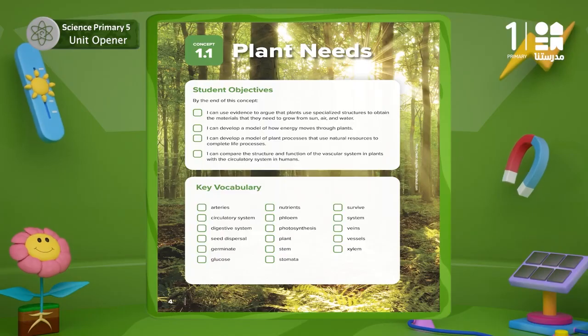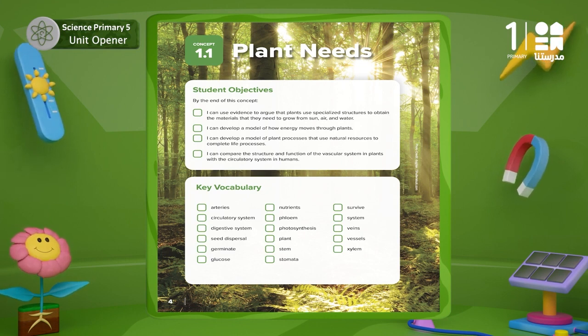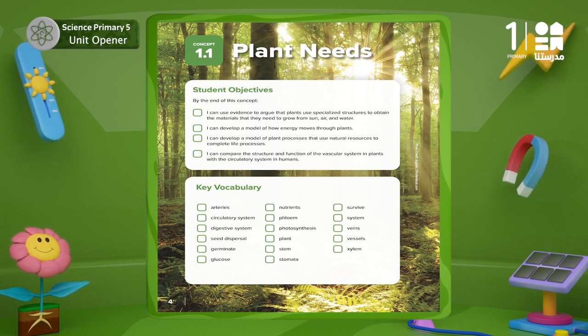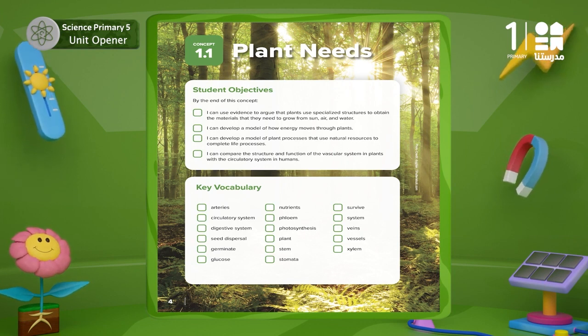This always begins with plants, because they are the main organism that can convert the energy of the sun into the energy stored in food. Almost all organisms in the ecosystem depend on plants, whether directly or indirectly. This is why in concept 1 we will study the basic plant needs for growth and survival.